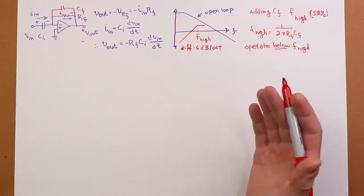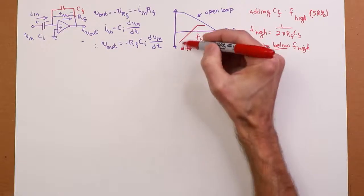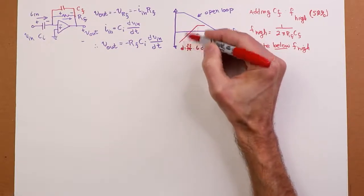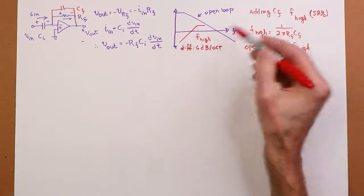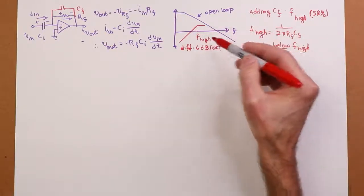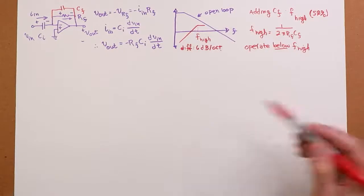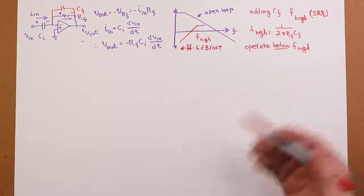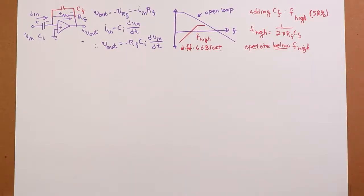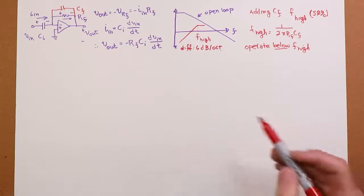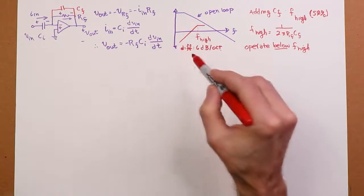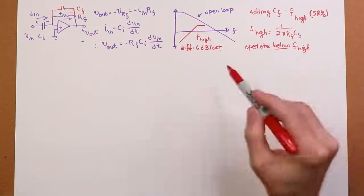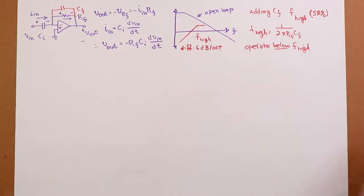Unlike an integrator, you could have a frequency down here that you're differentiating. That waveform could have higher frequency harmonics. Some of those could fall outside this range, could fall out beyond F_high, and that's going to reduce the accuracy. With an integrator, what ends up happening is we have an F_low, so the harmonics are going to be higher and higher, further and further away from F_low. So we don't suffer that kind of problem.